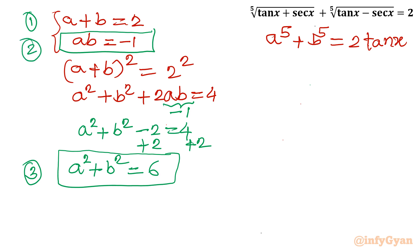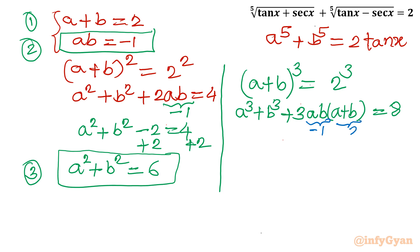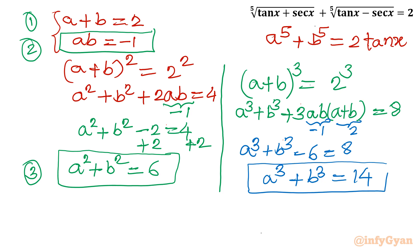Now let us find the cube. Cubing A + B = 2 gives (A+B)³ = 8. Expanding: A³ + B³ + 3AB(A+B) = 8. Substituting AB = −1 and A+B = 2: A³ + B³ + 3(−1)(2) = 8, so A³ + B³ − 6 = 8, giving A³ + B³ = 14. This is equation 4.